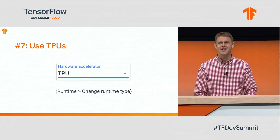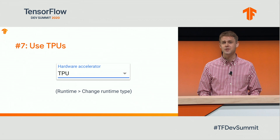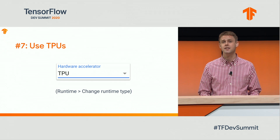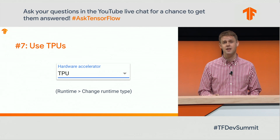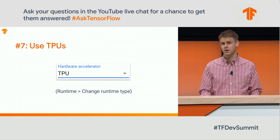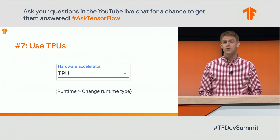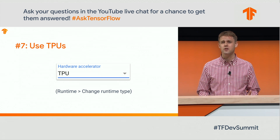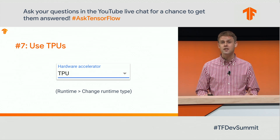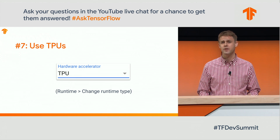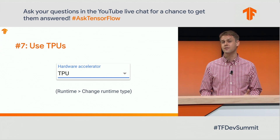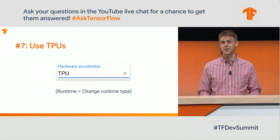Number 7: use TPUs. It's free in CoLab and very easy to do — just go to Change Runtime Type and select TPUs from the drop-down. If you want to feel the raw power of TPUs under your fingertips, give them a whirl for free in CoLab. And with TensorFlow 2.1, TPUs have never been easier to use.